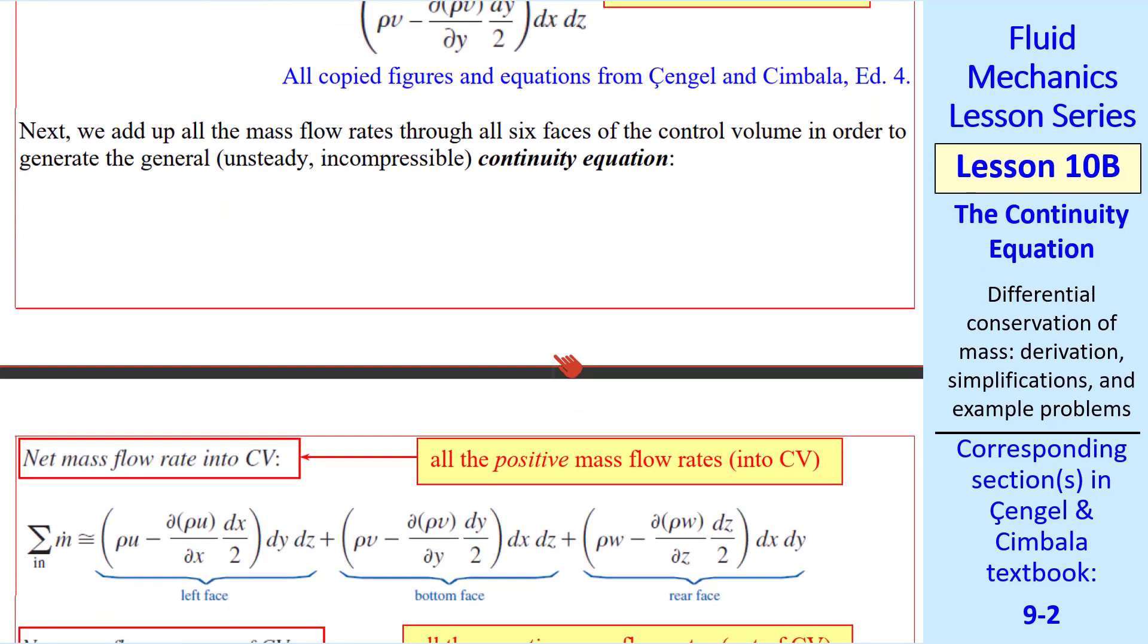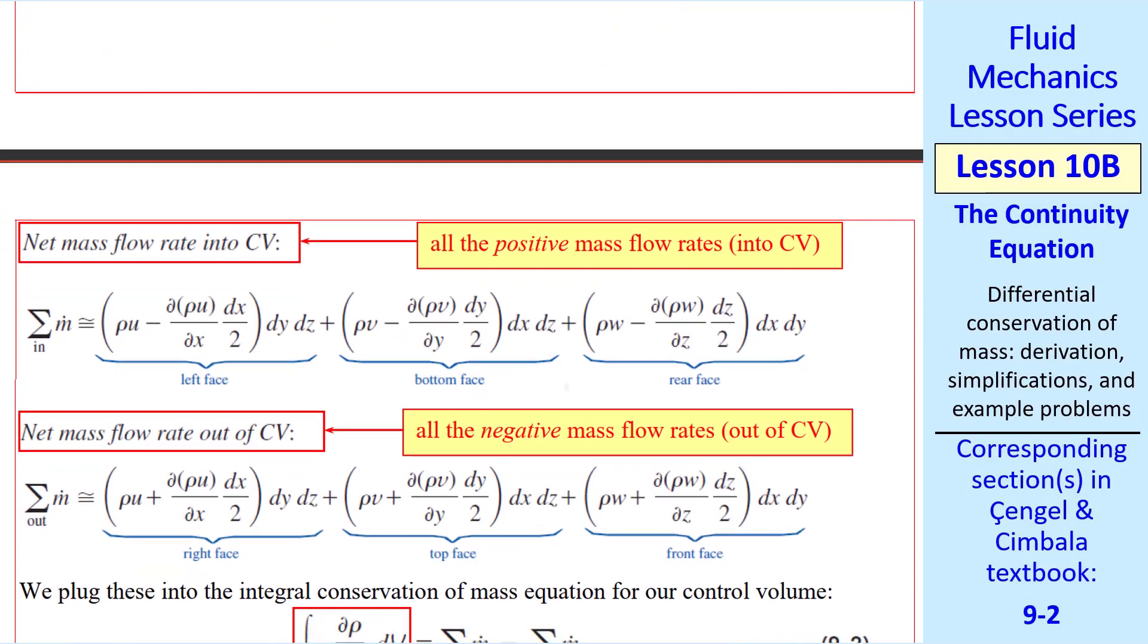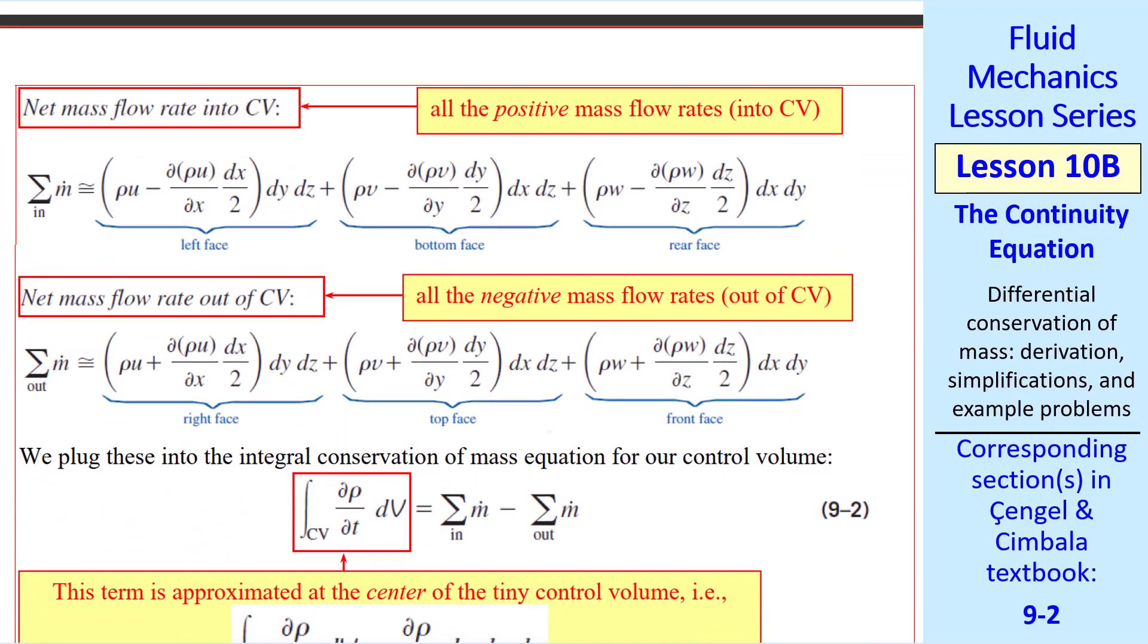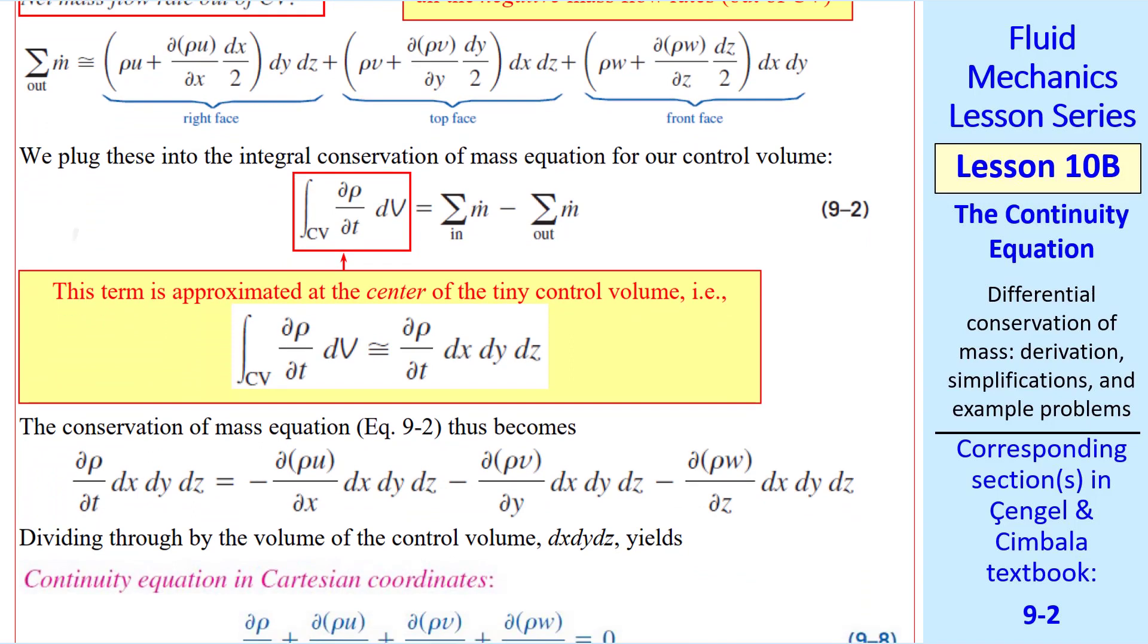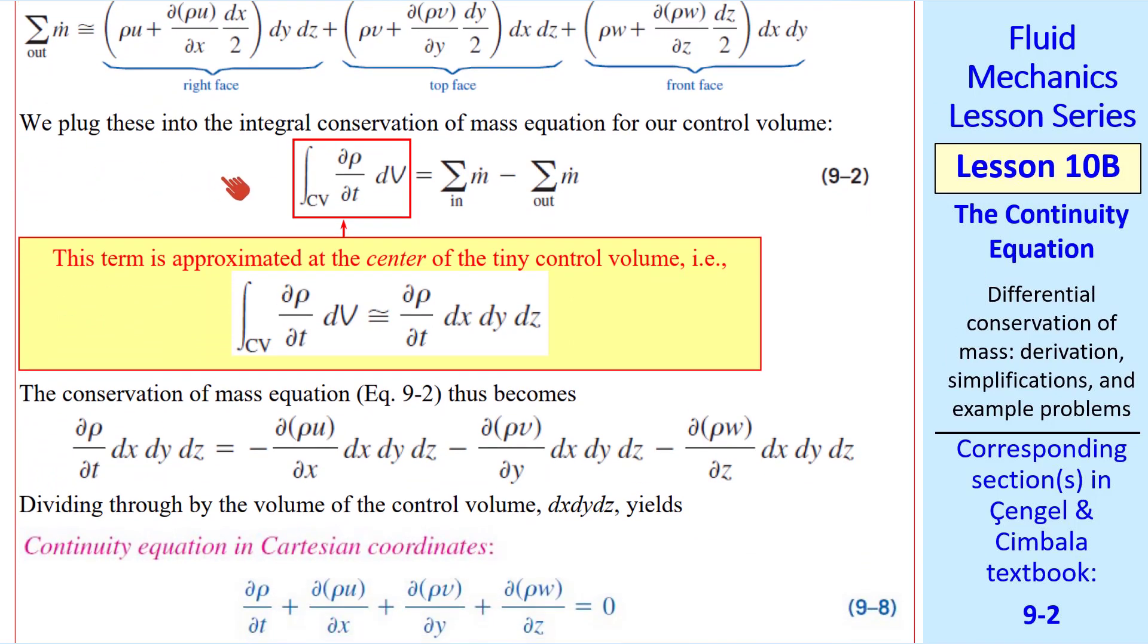Now we add up all the positive mass flow rates into the control volume and all the negative mass flow rates out of the control volume. I call these sigma m dot in, where we sum the left, bottom, and rear face, and sigma m dot out, where we sum the right, top, and front face. Now we plug into our integral conservation of mass equation for a control volume from a previous lesson, where we have expressions above for these two terms. But what about this term?